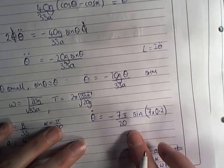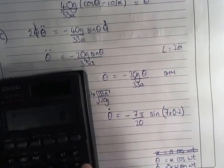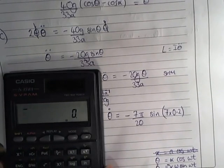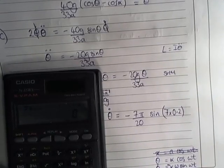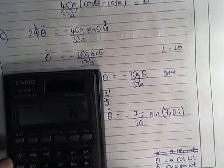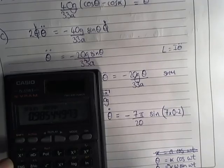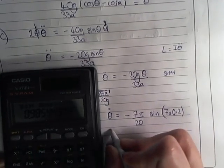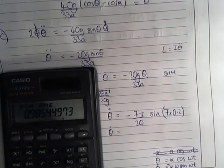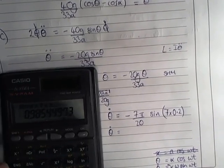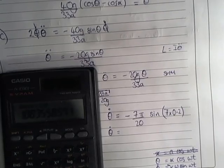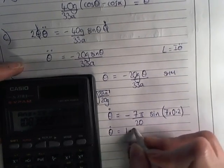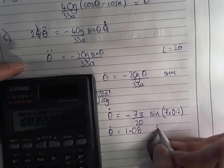So I need to pop this into my calculator, remembering that my calculator needs to be in radians. So let's choose radians. 7 times 0.2 is 1.4, I do sine of that. And then the angular speed will be this multiplied by 7 times pi divided by 20, and this gives me 1.08 to three significant figures.